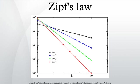For example, in the Brown Corpus of American English text, the word 'the' is the most frequently occurring word, and by itself accounts for nearly 7% of all word occurrences.